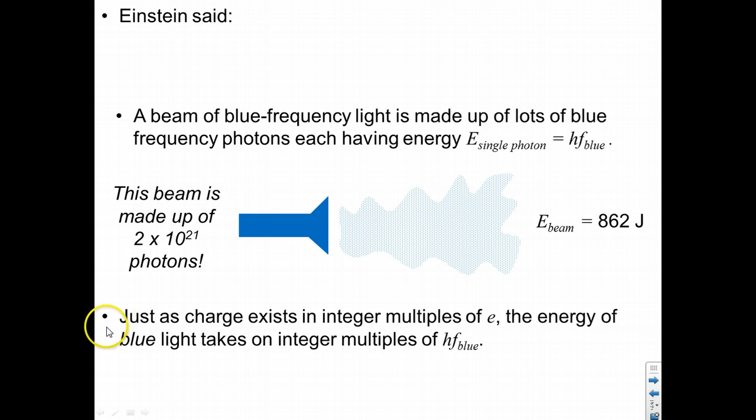What does this mean? Well, here's an analogy that might help us understand. Just as charge exists in integer multiples of 1.6 e negative 19 coulombs, the energy of blue light takes on only integer multiples of Planck's constant times the blue frequency.